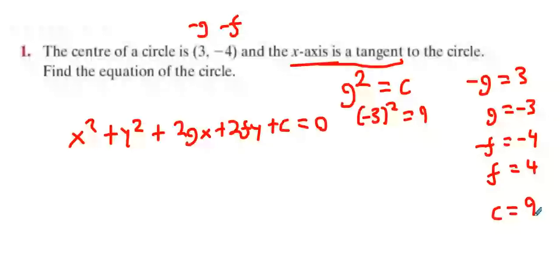c is g squared. So it's minus 3 squared, which is 9. Do I have enough to find the equation of the circle now? Pretty much done, isn't it? It's just x squared plus y squared plus 2gx minus 6x, 2fy 8y, and c value 9, and that equals 0.